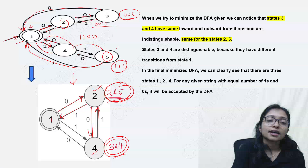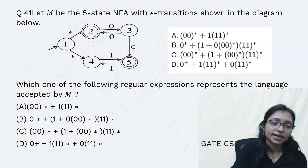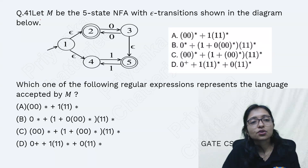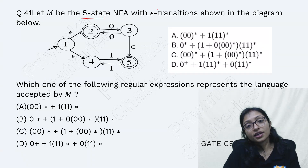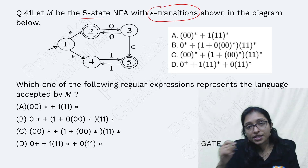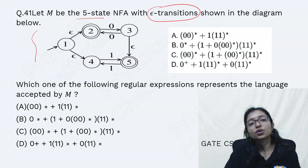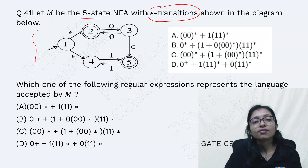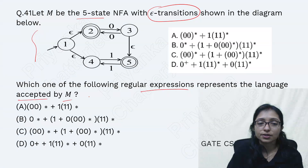Got it? I hope it is clear to everyone. Now go to the next question. Here in this question there are 5 states in an NFA with epsilon transitions - an Epsilon-NFA. From here you need to identify which of the regular expressions represents the language. How to do it? Think about it.